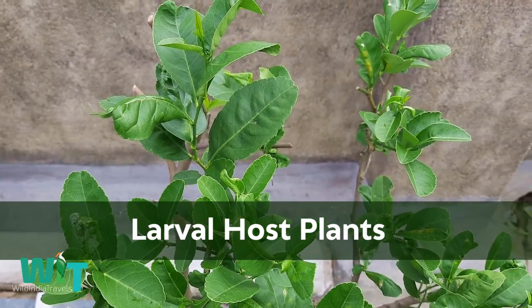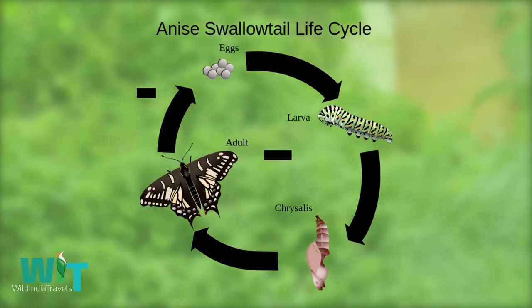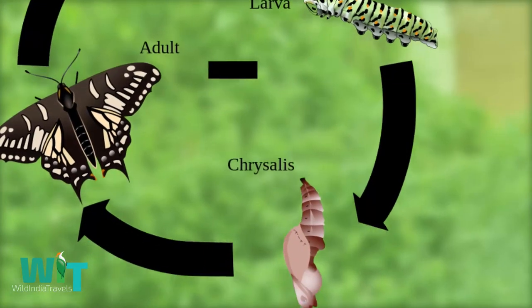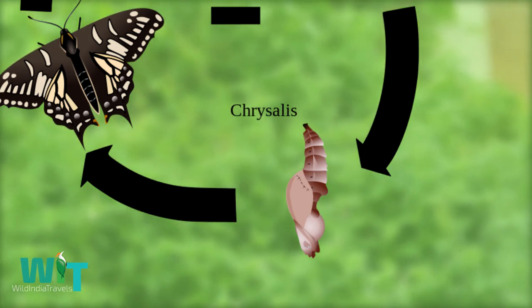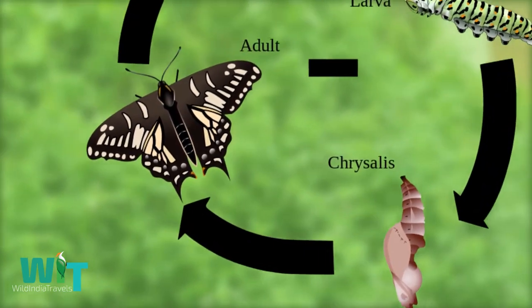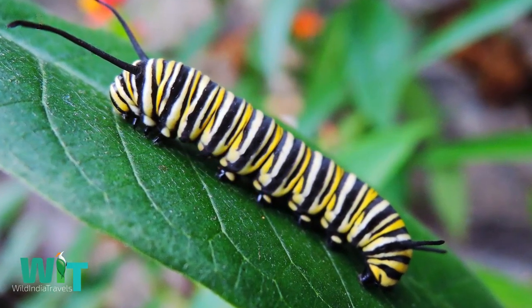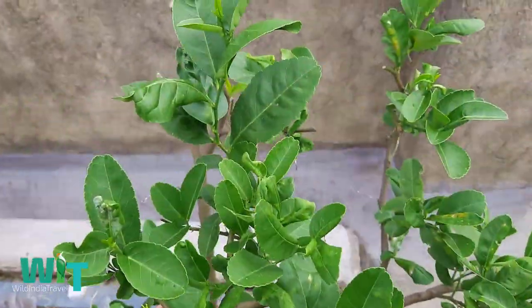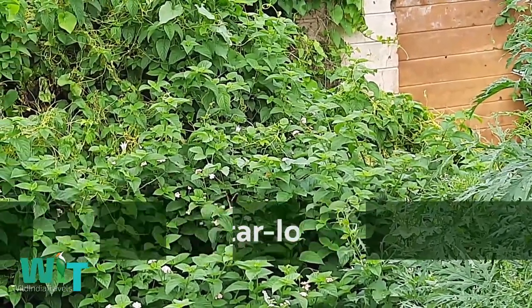বাগানে আলাদা আলাদা প্রজাপতির হোস্ট প্লান্ট লাগালে প্রচুর প্রজাপতি আসার চান্স থাকে। প্রজাপতির জীবন চক্র তিনটি ভাগে বিভক্ত — পূর্ণাঙ্গ প্রজাপতি ডিম পাড়ে, তাথেকে লার্ভা বেরোয় যাকে আমরা শুঁয়োপোকা বলি, তারপর শুঁয়োপোকা নিজের চারপাশে গুটি বাঁধে। নির্দিষ্ট দিন পরে গুটি কেটে পূর্ণাঙ্গ প্রজাপতি বের হয়। প্রজাপতি যে গাছের পাতা খায় তাকে সেই প্রজাপতির হোস্ট প্লান্ট বলে। যেমন আমাদের কাছে আপাতত কারি পাতা এবং মরমন প্রজাপতির হোস্ট প্লান্ট।